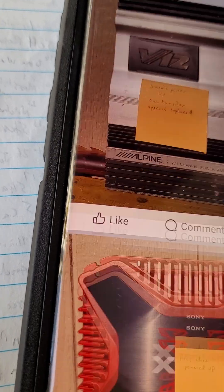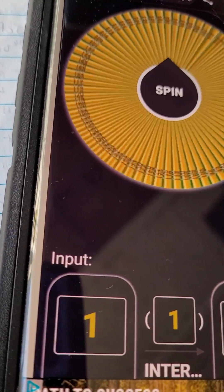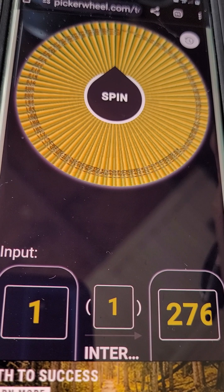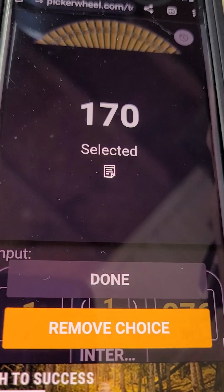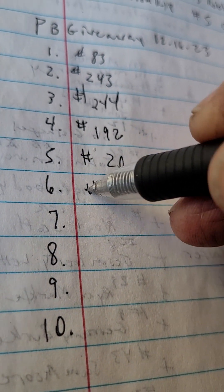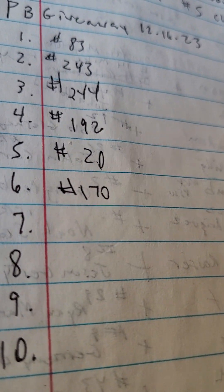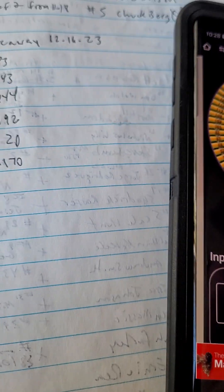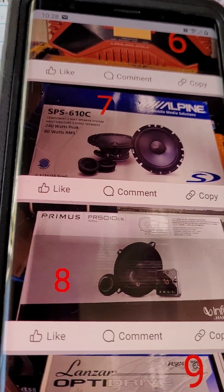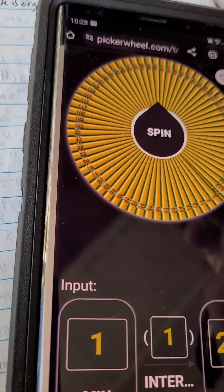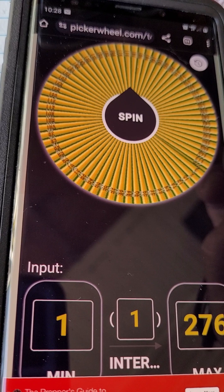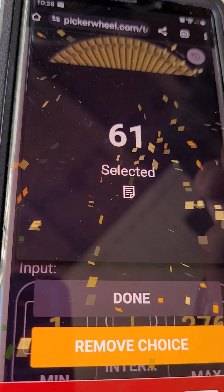What's next? The Sony amp. And the winner is 170. Number 170. Alright, now what is next? Alpine component set. That is 61.